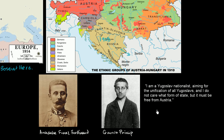So up to this point, even though you had these linguistic and ethnic connections — and obviously some religious differences — the southern Slavic states had not been unified before. When Princip says 'Yugoslav nationalist,' he's talking about the southern Slavic states. He wants to form them into one unified nation.